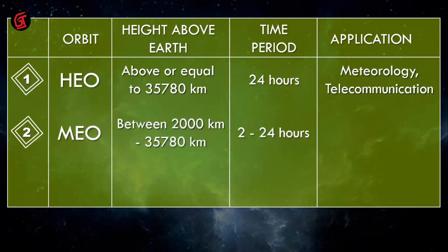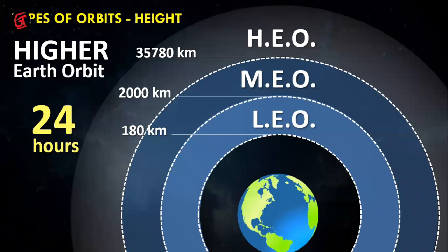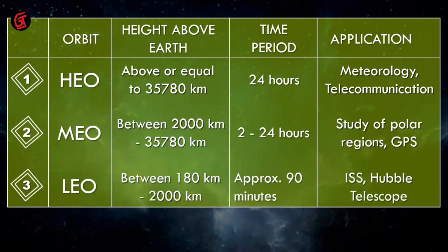Orbits are divided into three types: HEO (Higher Earth Orbit) is the most expanded, with a maximum of around 35,780 km. MEO (Medium Earth Orbit) is at 2,000 km. LEO (Low Earth Orbit) is the lowest at 180 km. LEO is used for telescopes and observation, MEO for polar regions, and HEO for telecommunication.